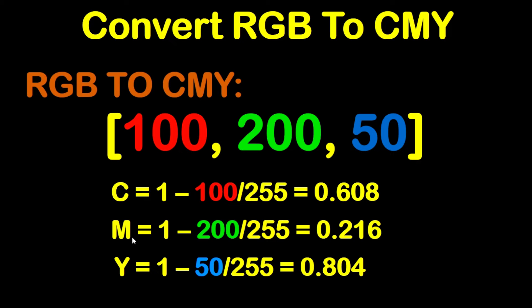Now to be able to get the magenta component, this will be equal to 1 minus the green component, which is 200 in this case, divided by 255. This will give you 0.216.